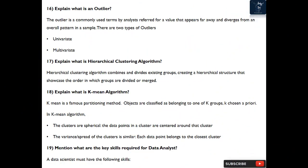Question 16: Explain what is an outlier? The outlier is a commonly used term by analysts referred for a value that appears far away and diverges from an overall pattern in a sample. There are two types of outliers: univariate and multivariate.